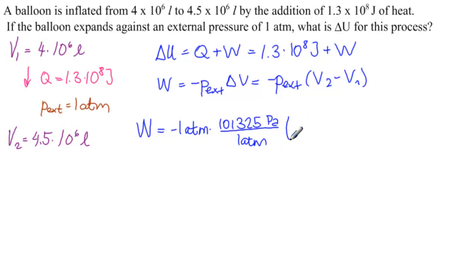And then we have 4.5 times 10 to the 6, minus 4 times 10 to the 6 liters. And we know that we have 1,000 liters in a meter cubed, so this is 10 to the minus 3 meters cubed over liters. And when we have Pascals and meters cubed, we get joules. So we're good.